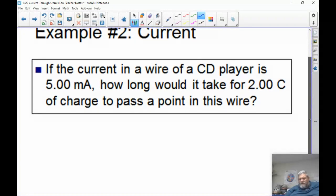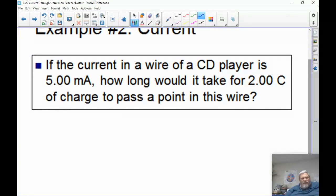Here's the second one. If a current in a wire of a CD player is 5 milliamps, so we're going to have to convert that milliamps to amps at some point, how long would it take for a 2-coulomb charge to pass a point in this wire? So again, I is Q over T, and this time we're solving for T. Let's rearrange the equation first. Q equals I times T. We multiply both sides by T, and we can start with that, then we'll solve for T. It'll make our life a lot easier.